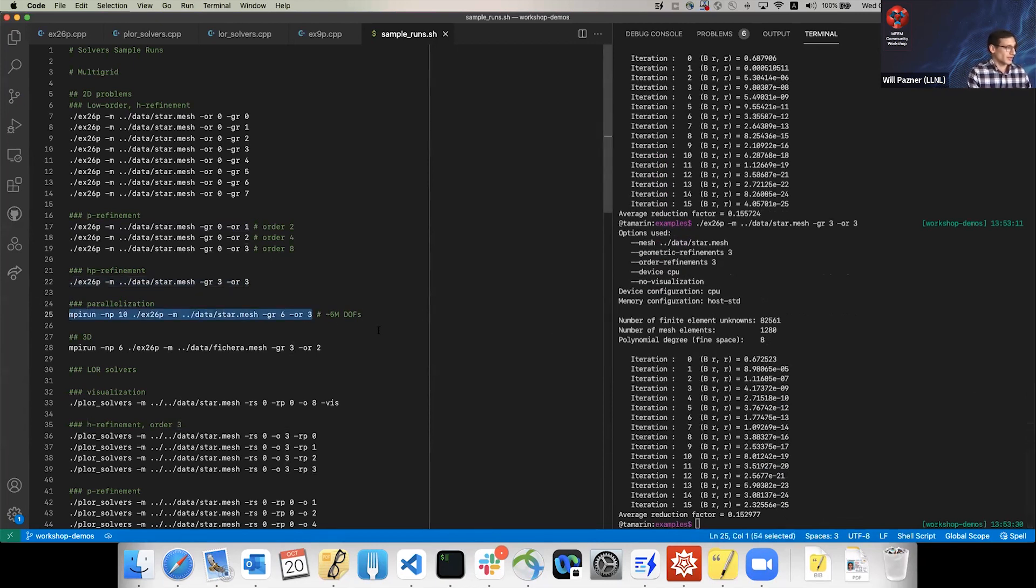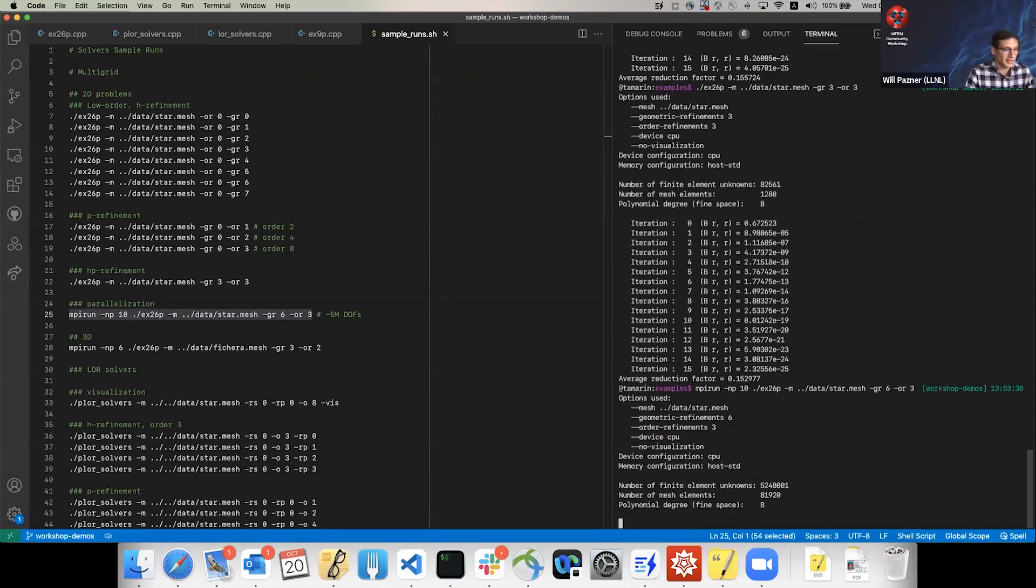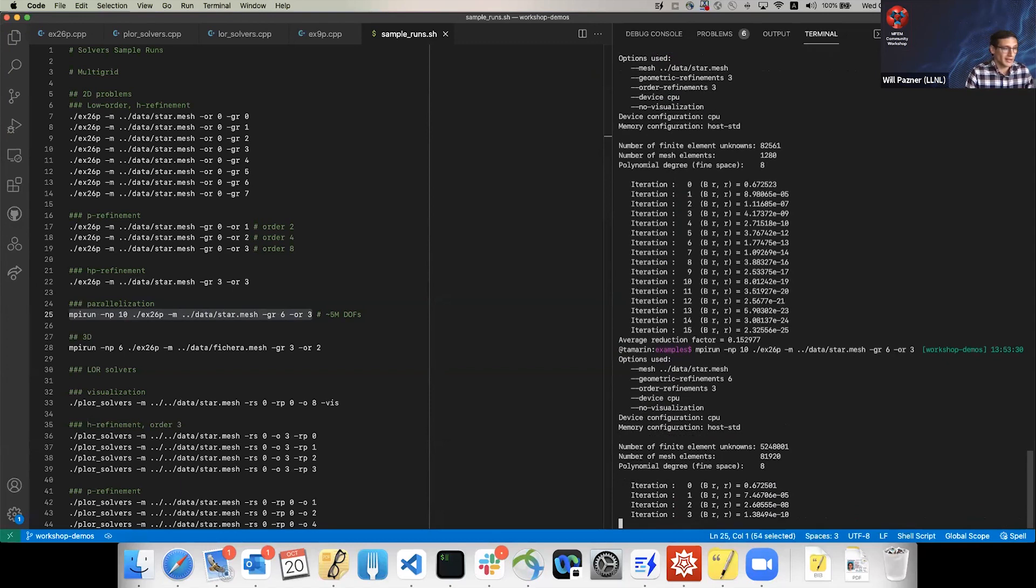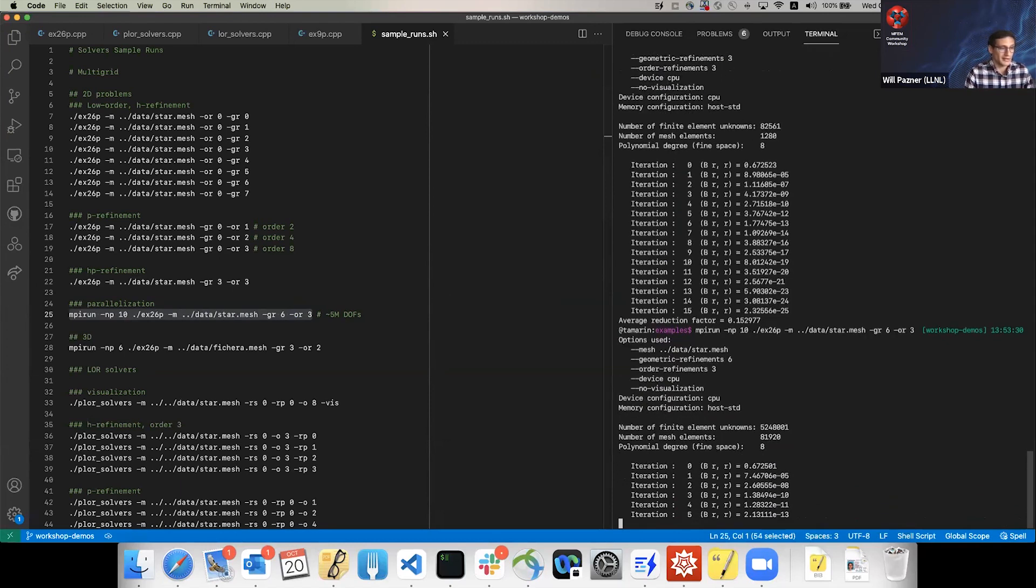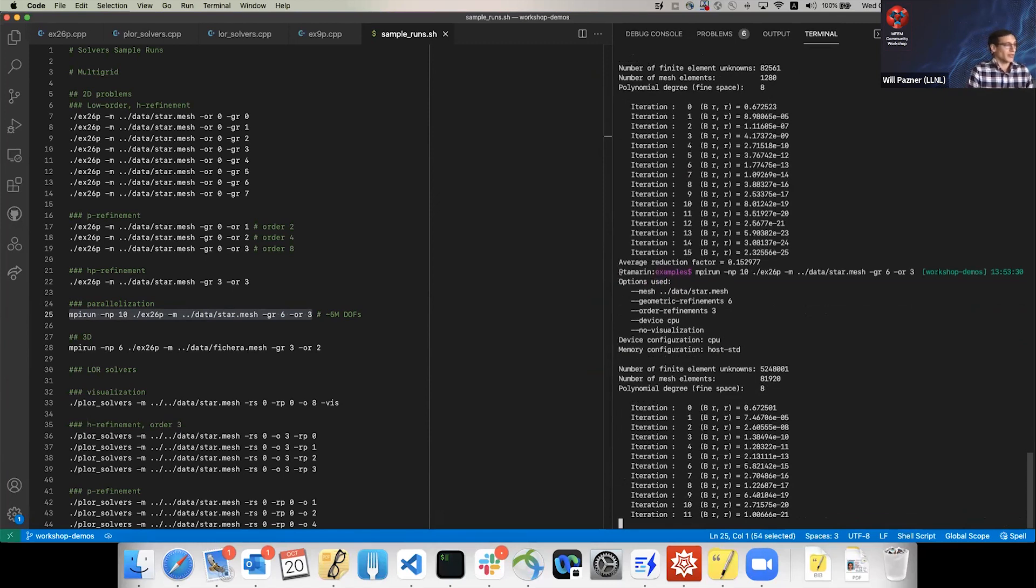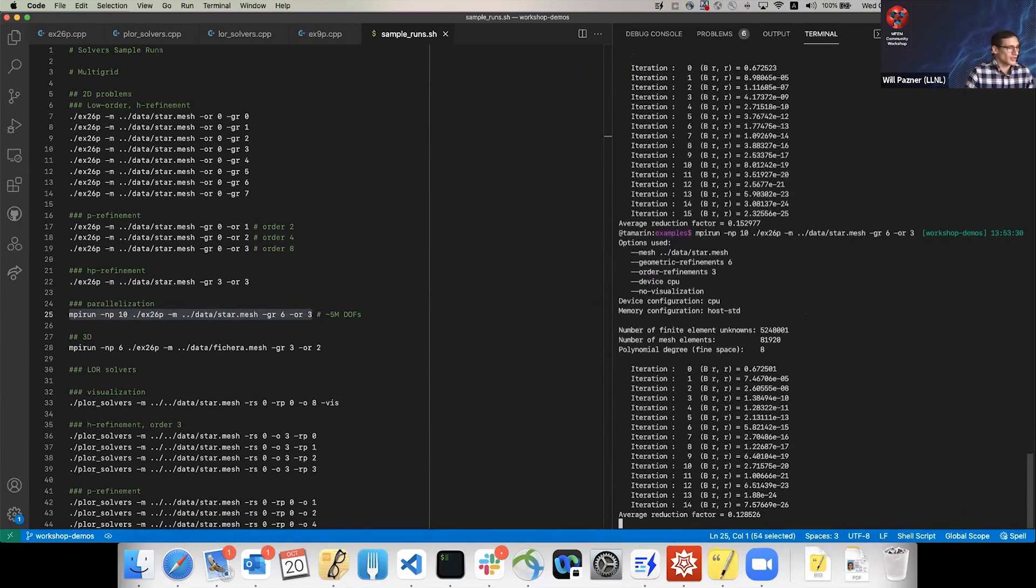You can do combinations of HP refinement in hierarchies. This is doing both three geometric refinements and three order refinements. The parallel example works in parallel just the same. This is a big problem, about 5 million degrees of freedom, and it's just running on my laptop. These are some 2D problems - it works just the same. You give it a 3D mesh and it will work just the same.